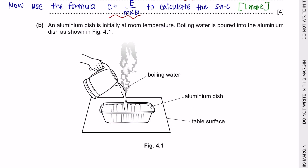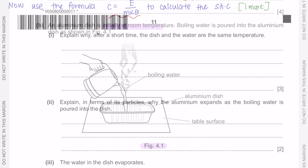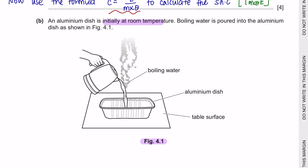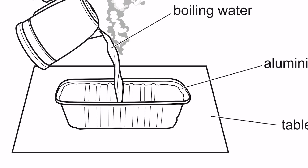Question B: an aluminium dish is initially at room temperature. Boiling water is poured into the aluminium dish as shown in figure 4.1. Part 1: explain why, after a short time, the dish and the water are at the same temperature. Heat from the boiling water is transferred to the aluminium from the high-temperature region to the low-temperature region, until they reach thermal equilibrium. Since the transfer is through a solid, you must mention that the energy transfer occurs by conduction.